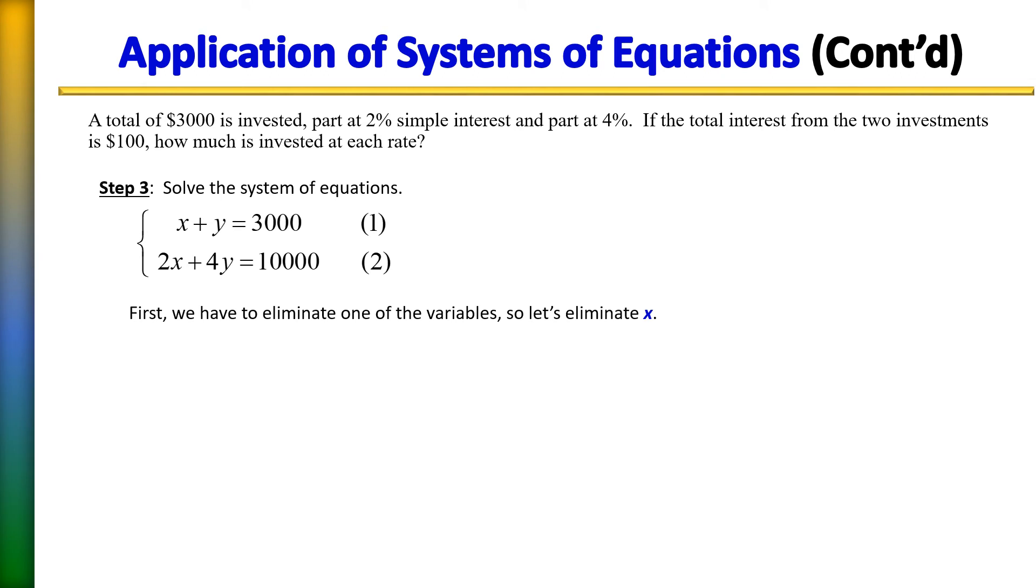So now that we have our equations, we can eliminate one of the variables. So let's eliminate x. And to eliminate x, all we need to do is just simply multiply the top equation by negative two. So when we do that, the first equation will change. We did not do anything to our second equation. We leave that alone.